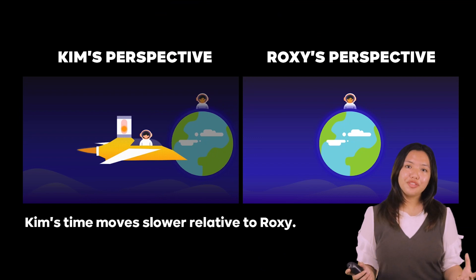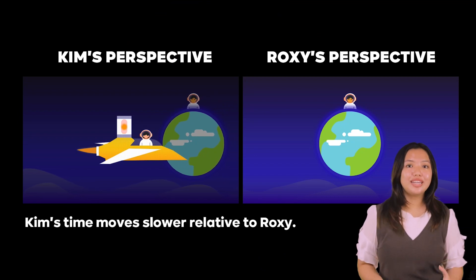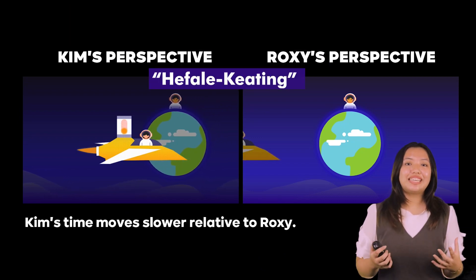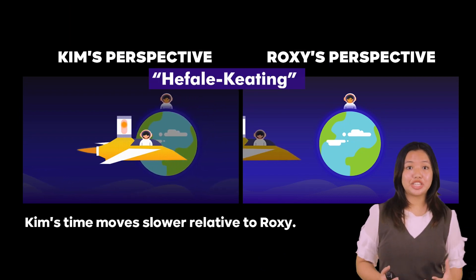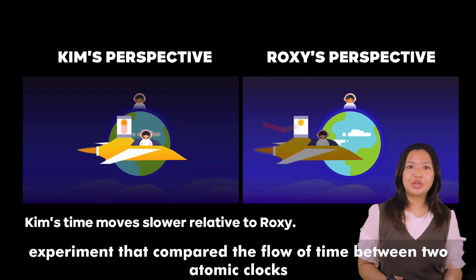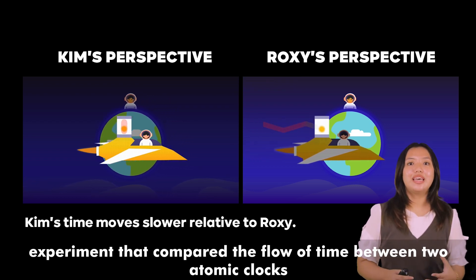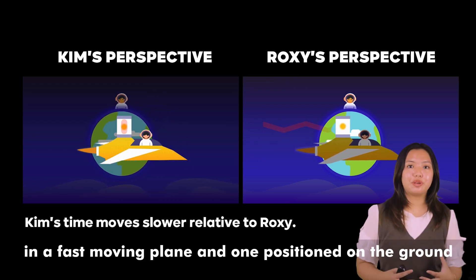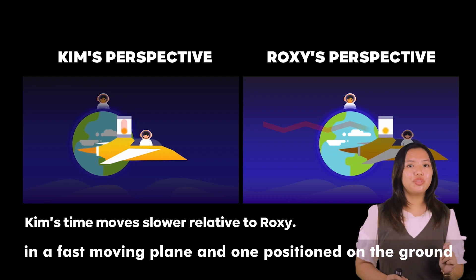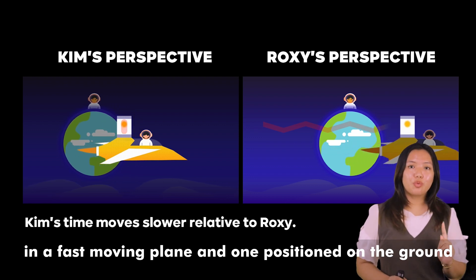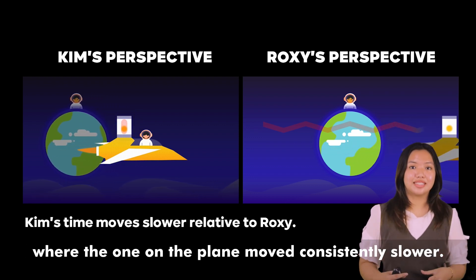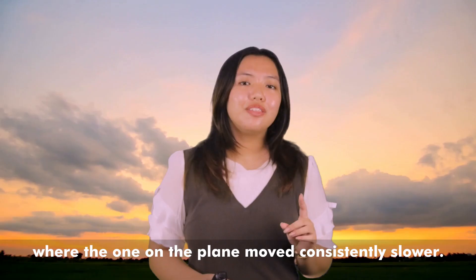Another example is the Hafele-Keating experiment, which compared the flow of time between two atomic clocks — one in a fast-moving plane and one positioned on the ground — where the one on the plane moved consistently slower.